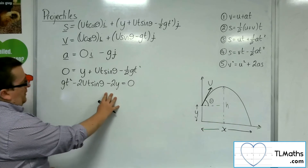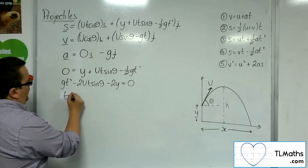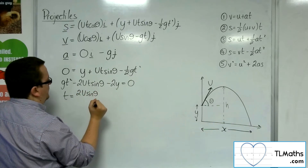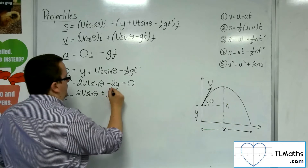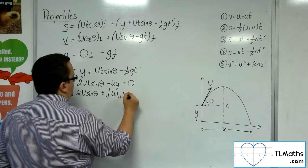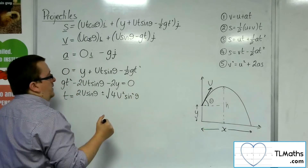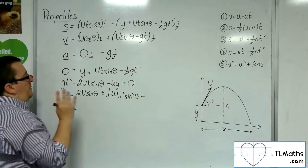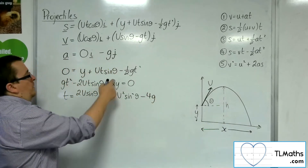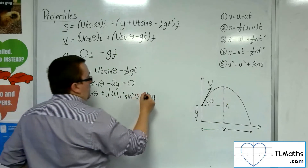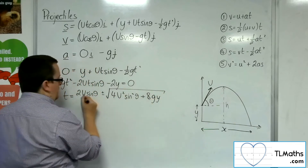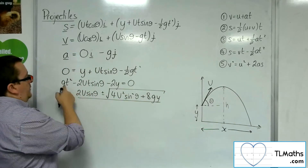So I'm going to use the quadratic formula to solve this. t equals minus b, so 2u sine theta, plus or minus the square root of b squared — so 4u squared sine squared theta — take away 4ac, so take away 4 lots of g times minus 2y, giving plus 8gy under the square root, all over 2a, so 2 lots of g.